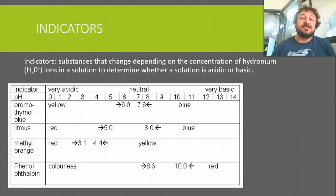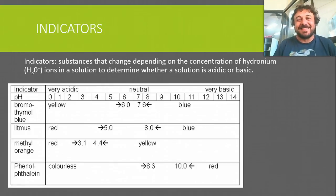Now, indicators. This is what we use to tell how acidic something is. Every indicator has a range, and they change depending on the concentration of hydronium ions in solution to determine whether a solution is acidic or basic.